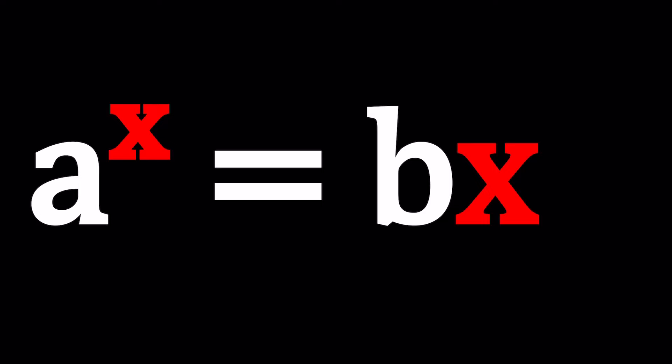So we have this equation a to the power x equals b times x, where a and b are given numbers. How do you make sure that this equation has solutions? How many solutions can it have — at least one, or maybe exactly one? For which values of a and b? We're going to look at those cases and I'm going to show you something really cool — something that you can play with.